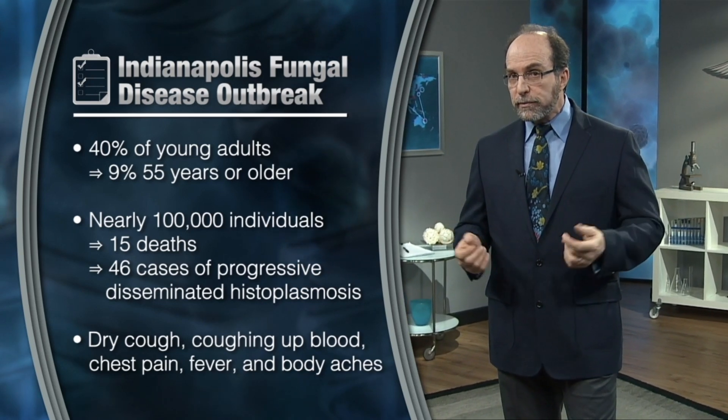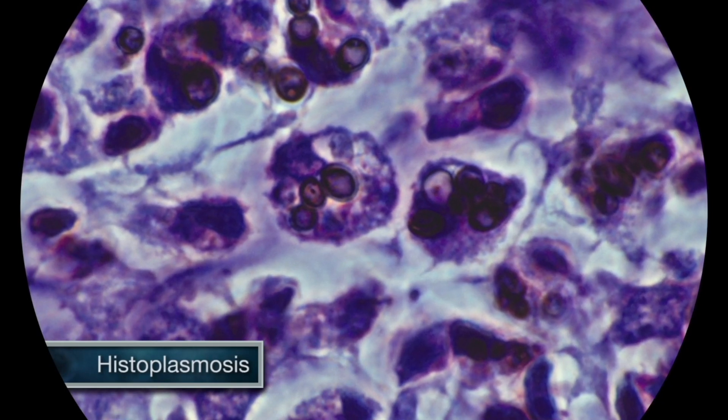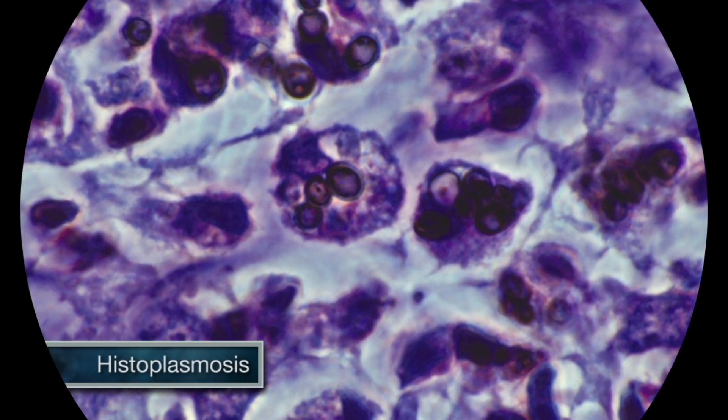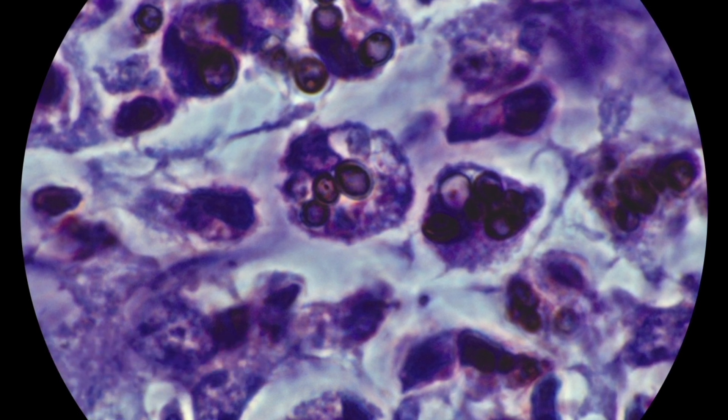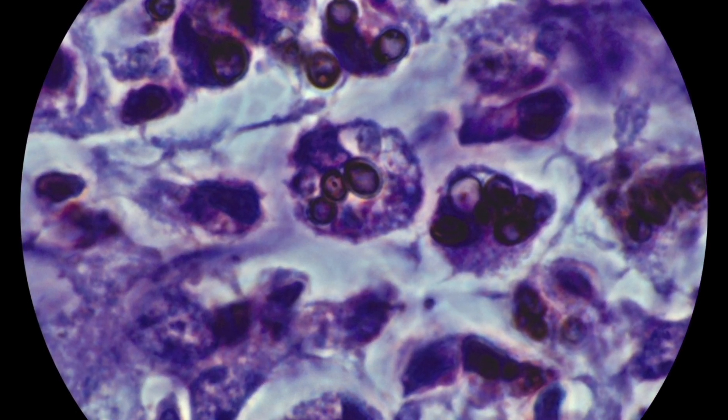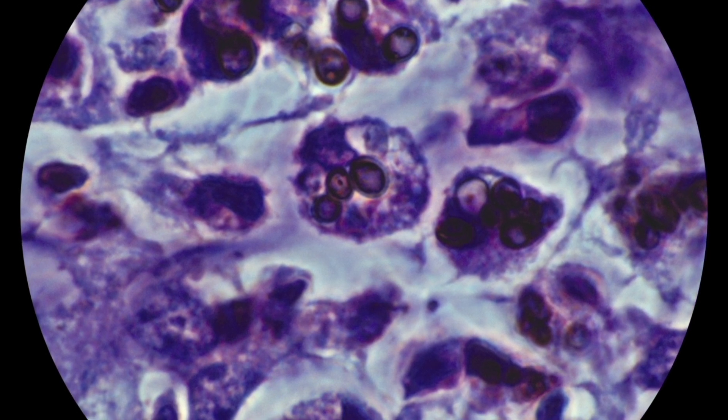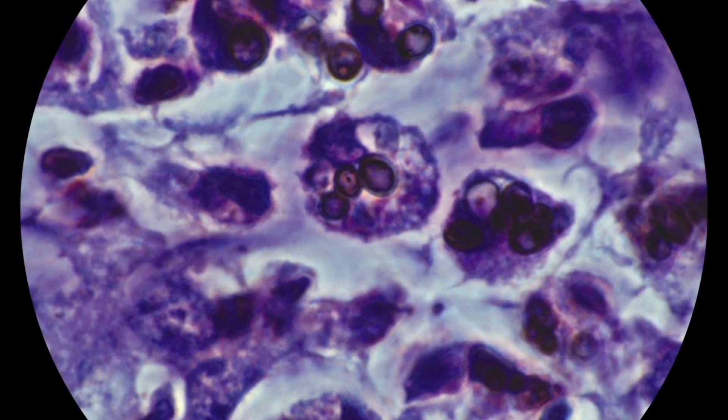Sound familiar? Surprisingly, in spite of a large epidemiologic investigation, no exact common source outbreak location was identified. Histoplasmosis was, however, cultured from all over Indianapolis. Cases appear to have clustered near the center of the city along the White River and Fall Creek that ran through Indianapolis. An old amusement park close to the center of the outbreak and demolition activities for a new tennis stadium were strongly suspected as the exact source of the fungus.